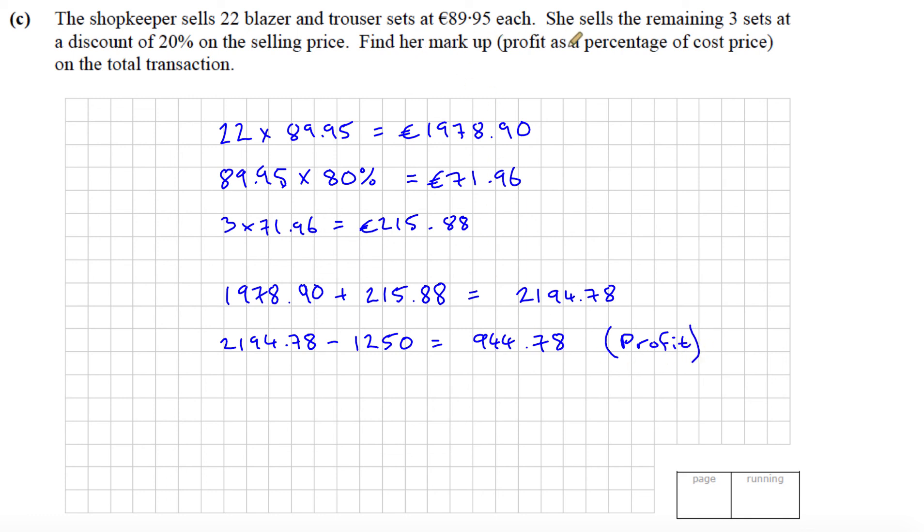They want to find her profit as a percent of cost price. To express that as a percentage of the cost price, we express it as a fraction of the cost price which was 1250, and times it by 100. That gives us an answer of 75.58 percent. That's her percentage markup. That's the end of part C and the end of question one.